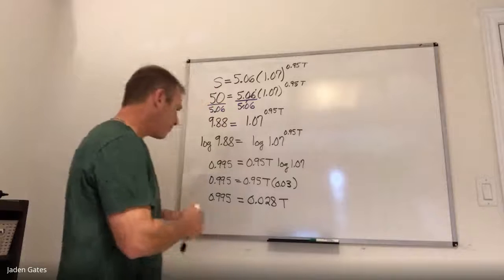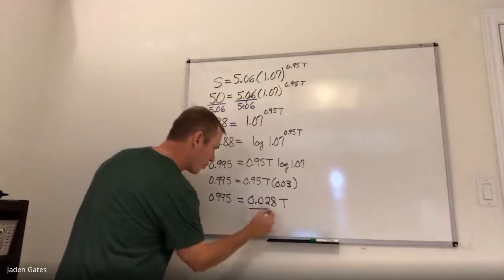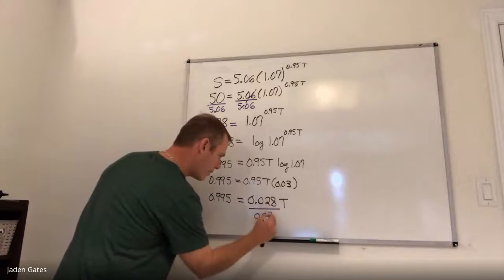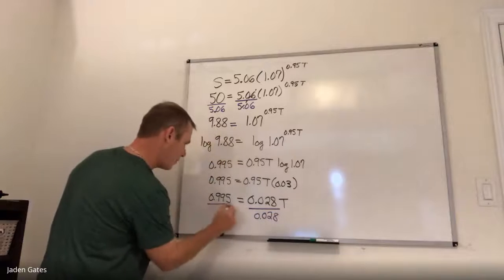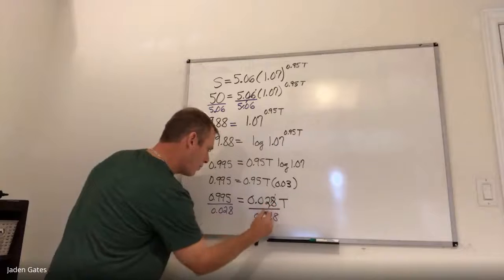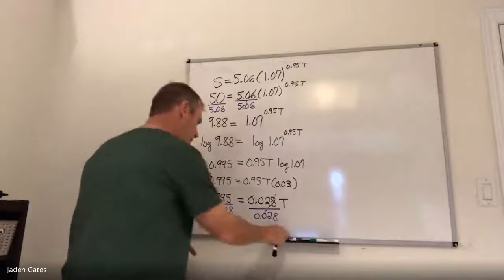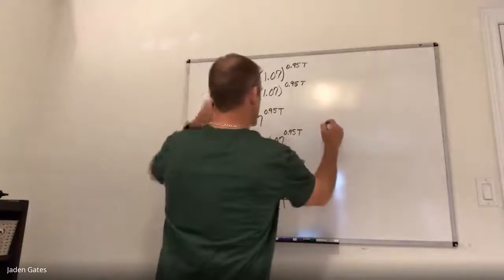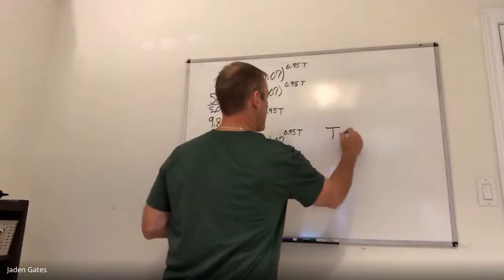All right. And then lastly, divide by numerical coefficient. There we go.